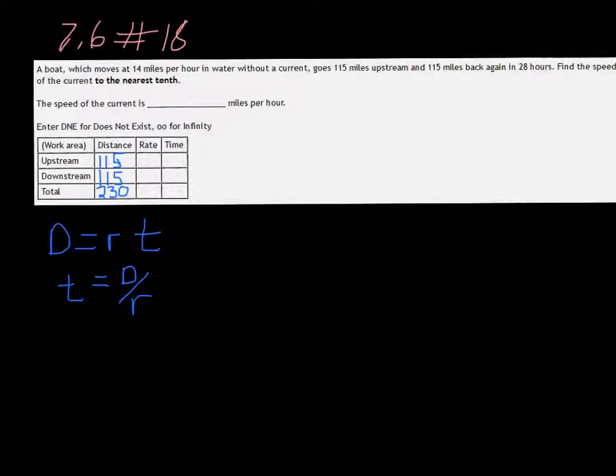We know that the boat is going 14 miles per hour, but we don't know what the current is. If it's going upstream, it's going against the current, so it's going to be 14 minus r. When it's going downstream, the current is helping it, so we add the current. Subtract it when going up, add it when going down.